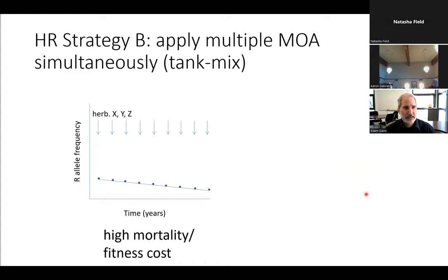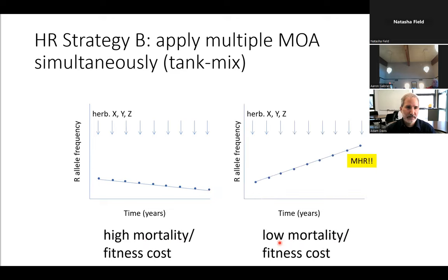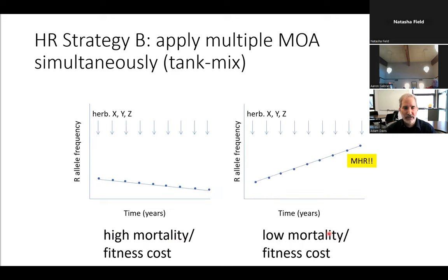Another possibility is to apply multiple tools simultaneously through a tank mix every year. If you've got a resistance trait with a high fitness cost, you could potentially drive that trait out of the population over time. On the other hand, if there's a low fitness cost, you could end up selecting on multiple herbicide resistance and getting into serious trouble very quickly.